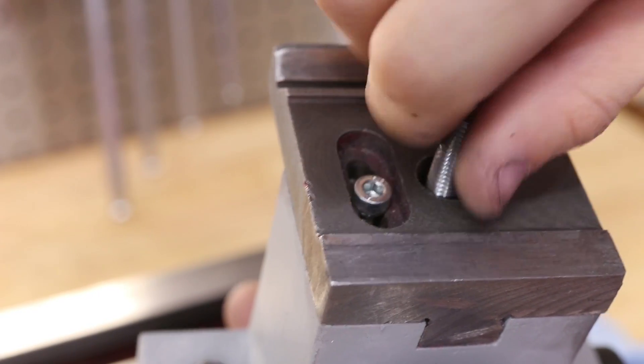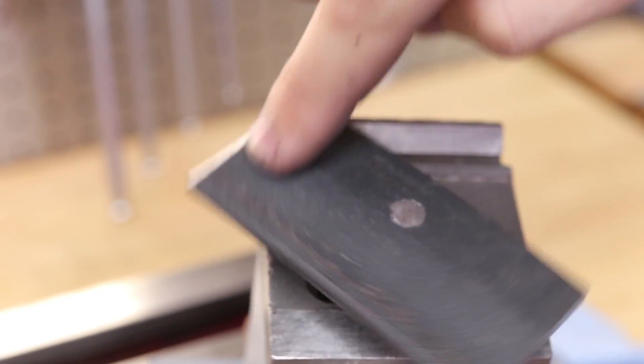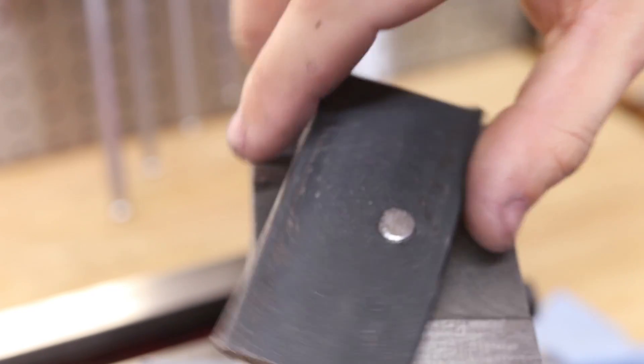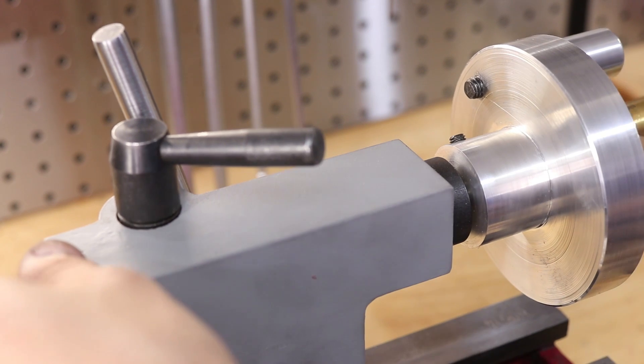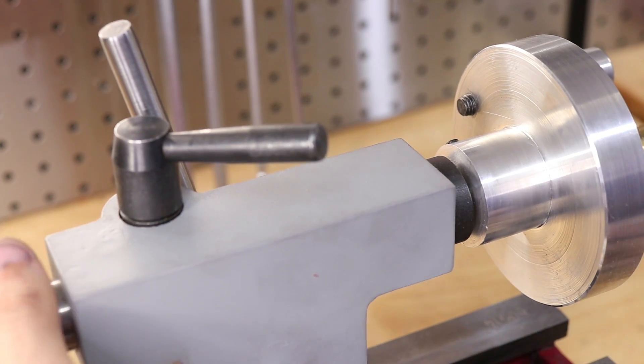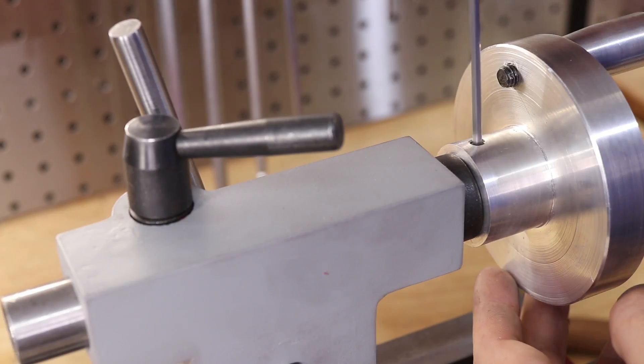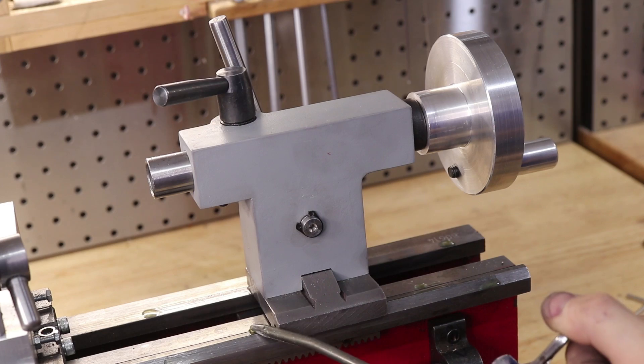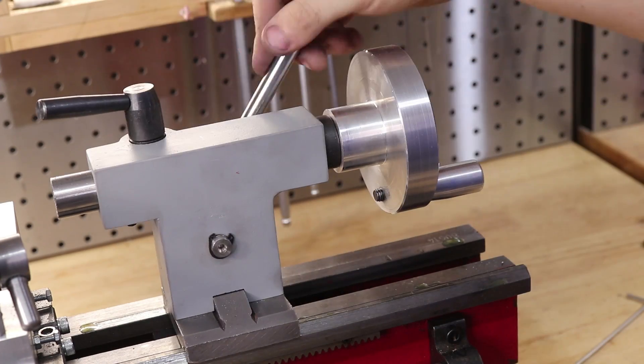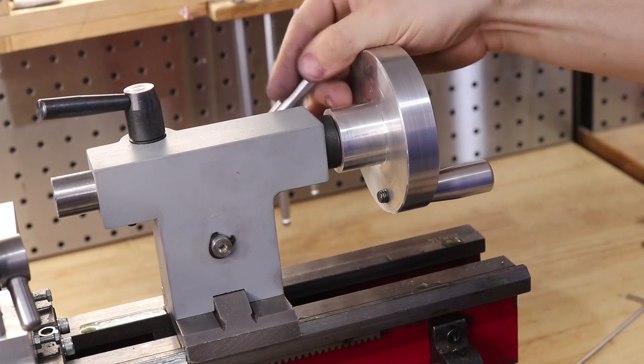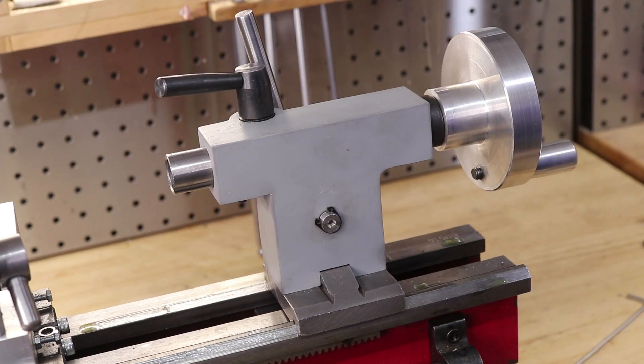The locking plate is then screwed in. Now there were quite a few adjustments that I had to make but eventually when you pull on the lever the locking plate is pulled up and the tailstock is locked in place.